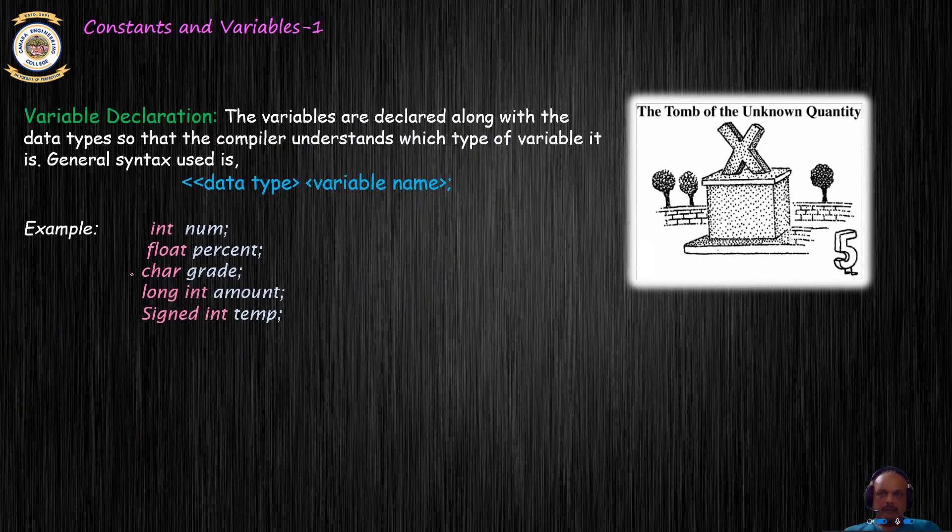Let us see the format of variable declaration. Any variable declaration in C follows this particular format. The variable name has to be initially associated with the data type so that enough memory gets allotted for this name to store the information in a particular format. Here are some examples in which variables are declared. We can have int num where num is the name of the variable of type integer. Hence 4 bytes get allocated to it. Float percent, so percent is the name of the variable of float type, so 4 bytes get assigned to it.